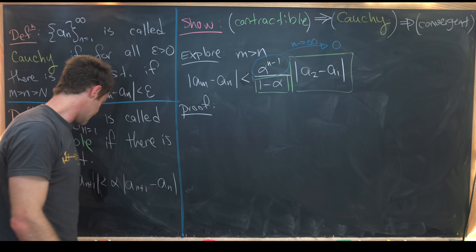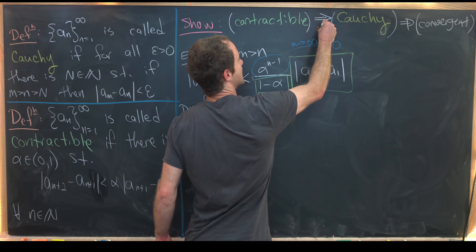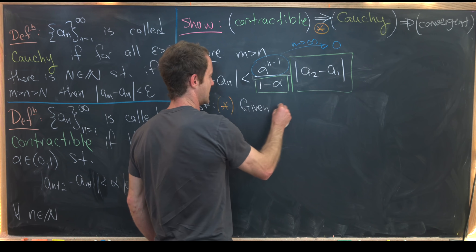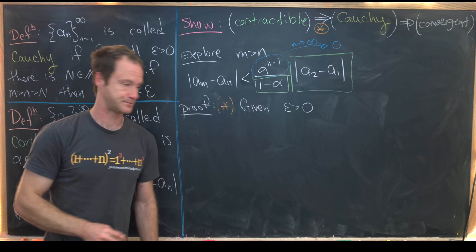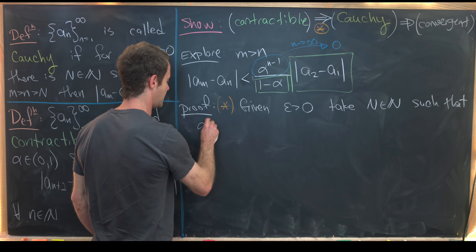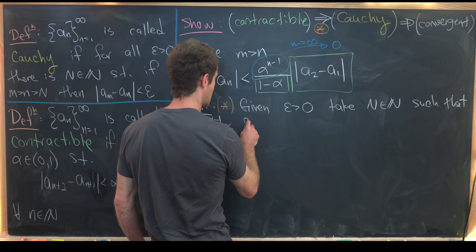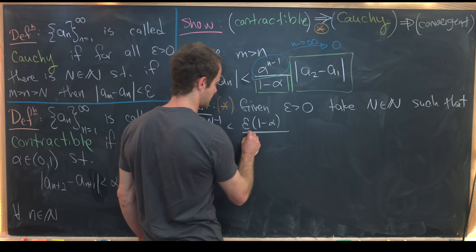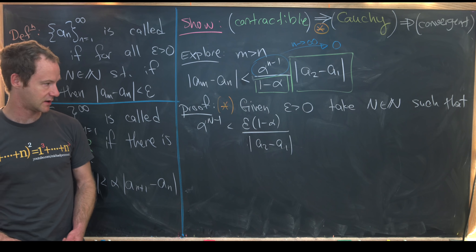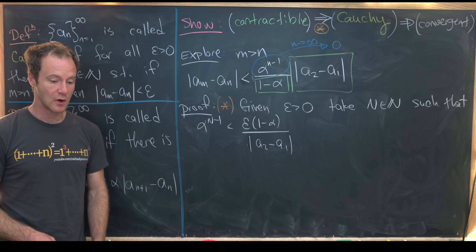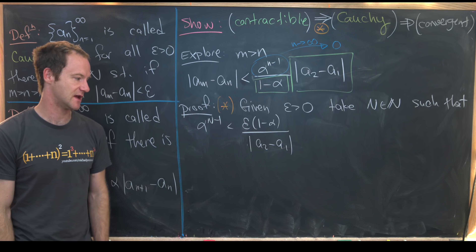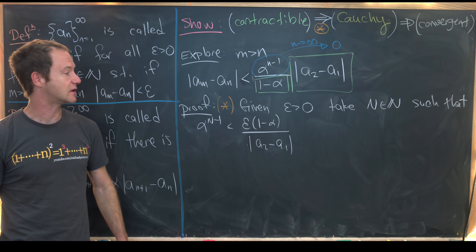Now we prove this is a Cauchy sequence. Given some epsilon greater than zero, choose a natural number capital N such that alpha^{N-1} is less than epsilon times (1 - alpha) / |a_2 - a_1|. We assume a_2 ≠ a_1 to avoid division by zero — I'll leave the case a_2 = a_1 as a homework problem; feel free to post in the comments what happens in that case.